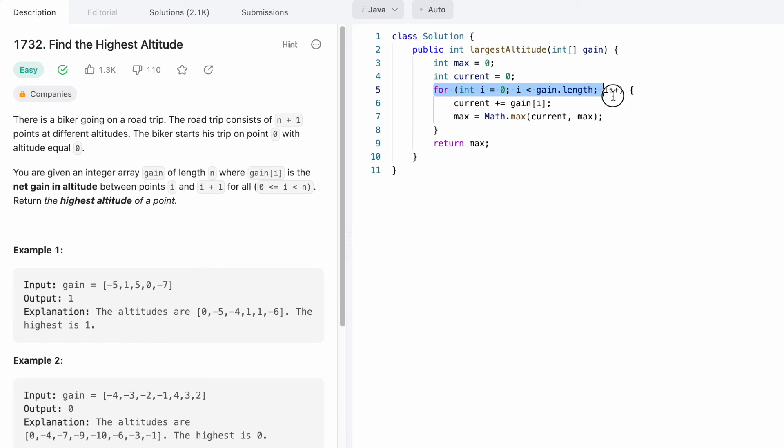Now using a for loop, let's iterate through the gains array. In each iteration, we're going to calculate the next altitude the biker will go to from that point, so we add the current gain into the current altitude.